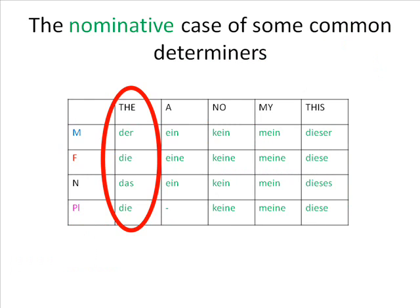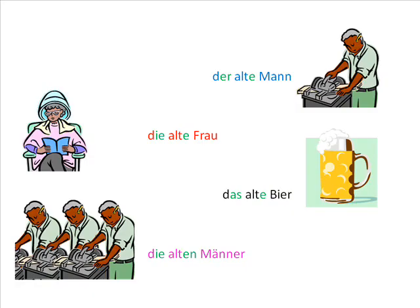With the word 'the,' it's a bit different. The masculine, feminine, neuter, and plural of 'the' are der, die, das, and die. After 'the,' all adjectives take an -e as their nominative ending, except after the plural which takes -en, thus distinguishing itself from the feminine form. So you get: 'der alte Mann,' 'die alte Frau,' 'das alte Bier,' and 'die alten Männer.'